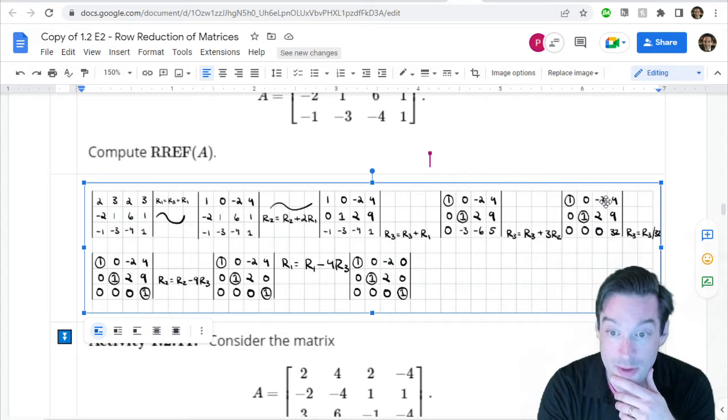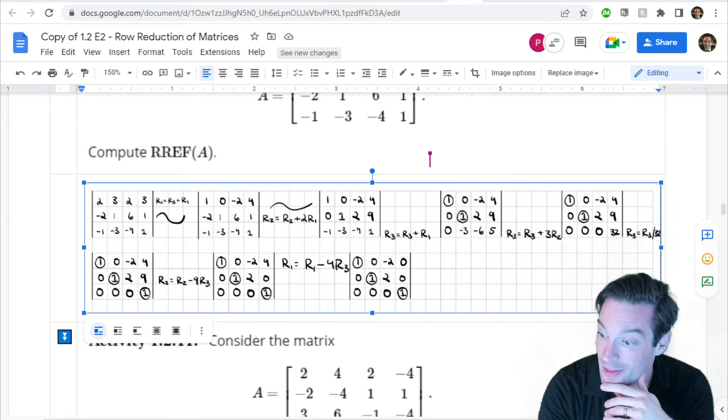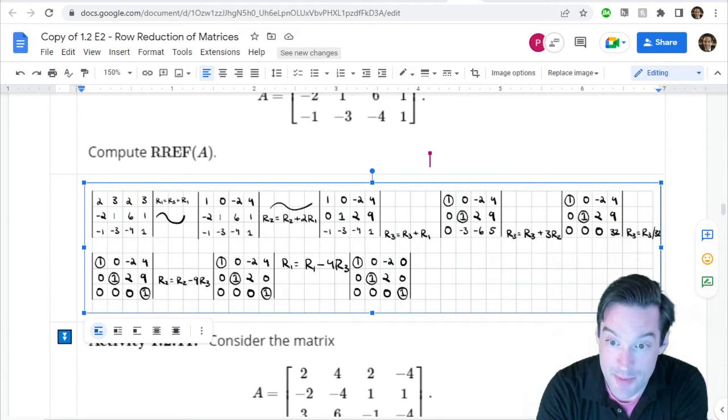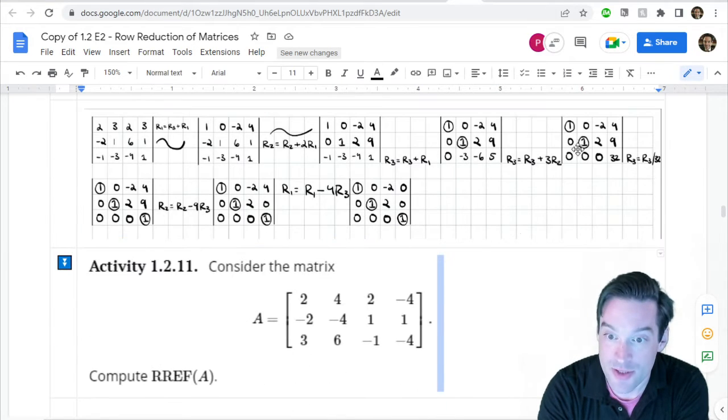And then we move our focus to the third column. And when we move our focus to the third column, what ends up happening here that's sort of different than what happened previously? Obviously, that row three, column three entry ends up being a zero here because the same row operation that zeroed out row three, column two, also zeroed out row three, column three.